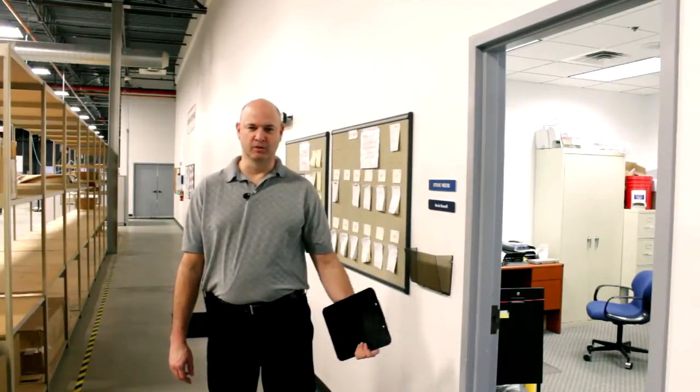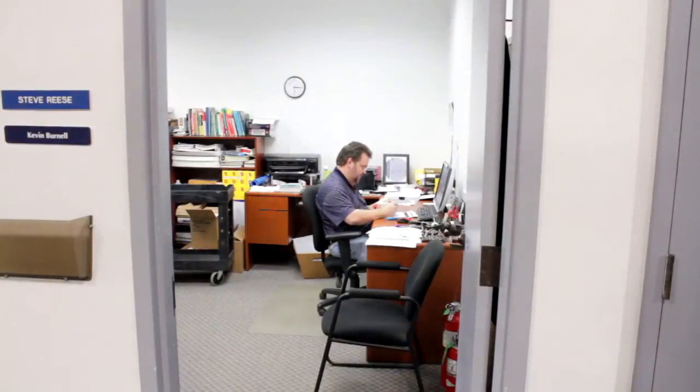Once out into the production floor, the first office you come to on your right is that of our production manager and our head of quality. Both individuals reside out of the same office with the intent that we can ensure that both manufacturing and quality are always in direct communication with each other and ensure that any issues that arrive get addressed immediately.